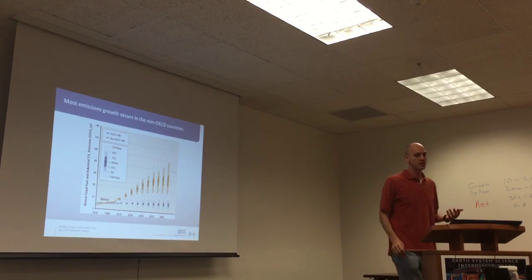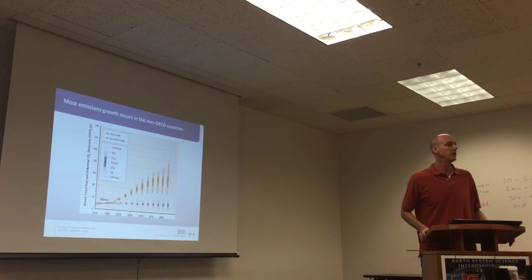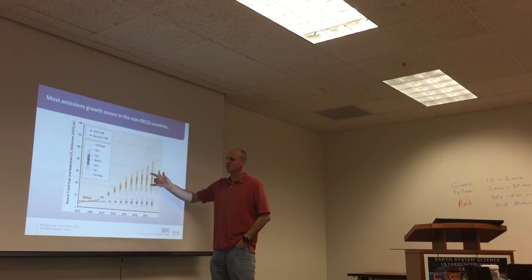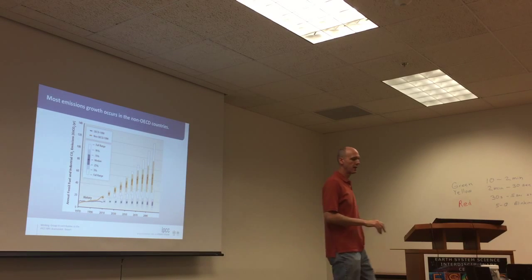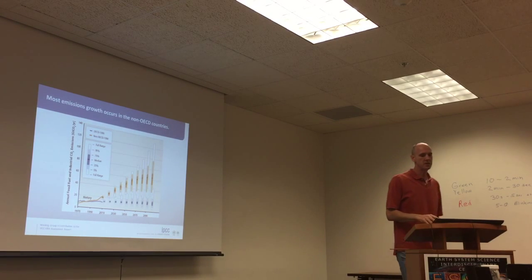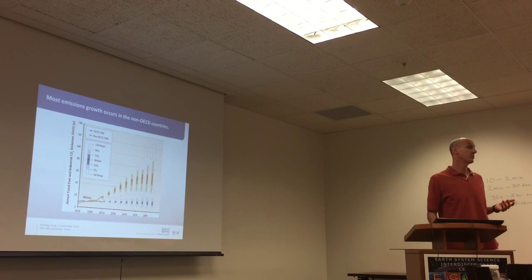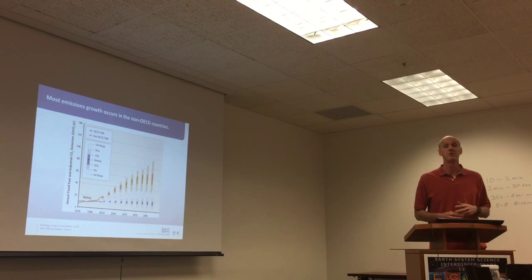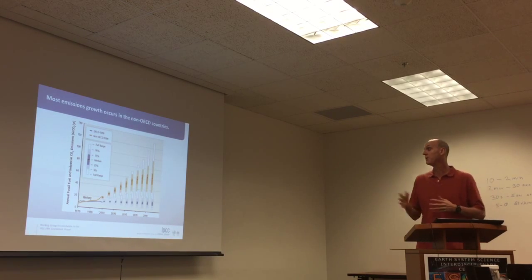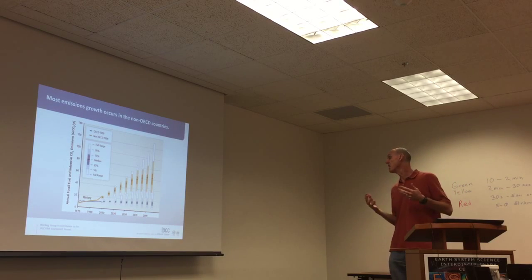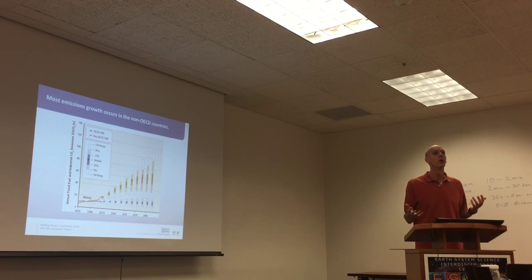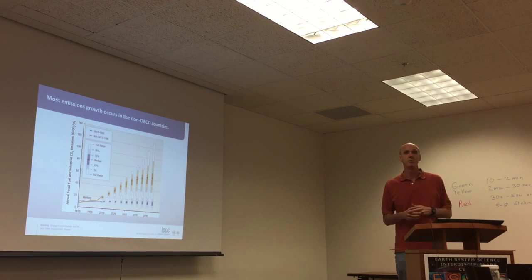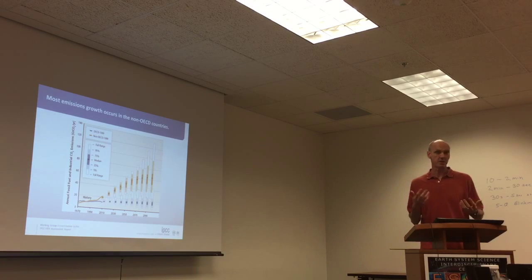In the IPCC or negotiating context, coming from the models, you see these gigantic ranges. This is pretty typical because of the assumptions about population and GDP in those countries. It's really driven by the assumptions. If you were to say that India, China, and Africa are never going to grow, then we would have a different result. It's really based on the assumptions of what's going to happen in those countries.